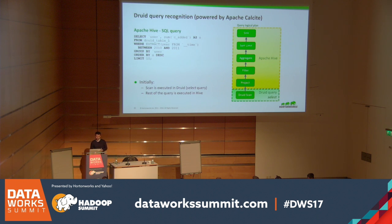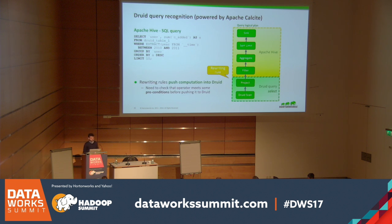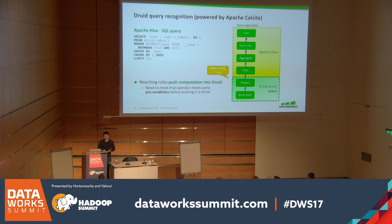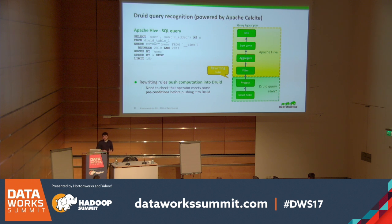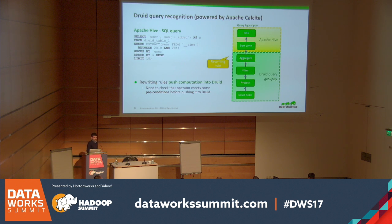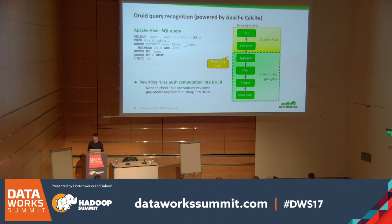At the start, only the Druid scan is executed in Druid as a select query that reads all the data, and the rest is executed in Hive. Then rewriting rules are triggered: the first rule pushes the project after checking preconditions. We push it, and now the project and Druid scan execute in Druid. A second rewriting rule pushes the filter to Druid. Another rule pushes the aggregate — and now the type of Druid query has changed to a group-by query.